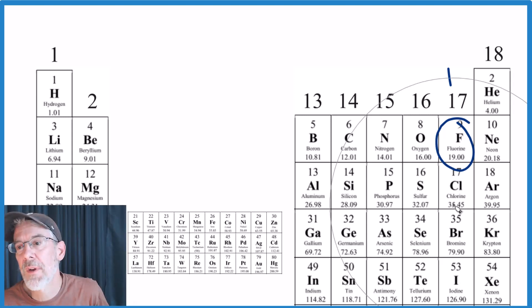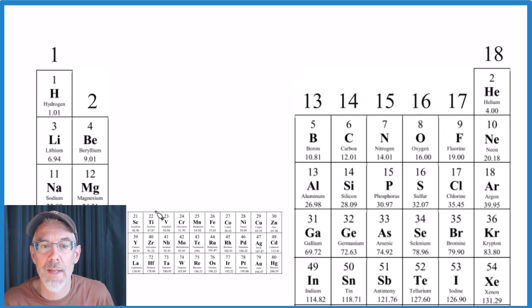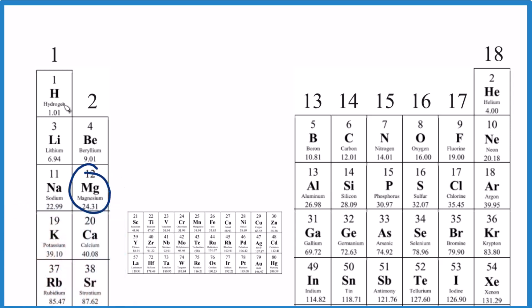If you can't figure that trend out, you're going to have a hard time. Let's try one more: magnesium. One plus, two plus. So magnesium, along with these elements, forms ions with a two plus ionic charge.